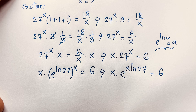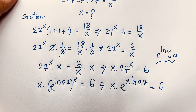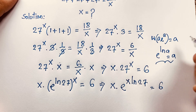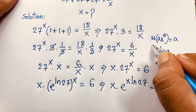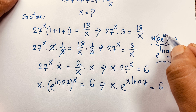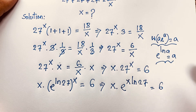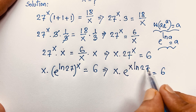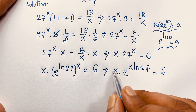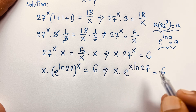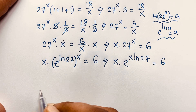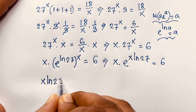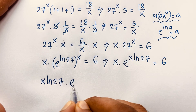We know the Lambert W function applies when we have the form a·e^a = a. Here our expression is x·e^(x·ln27), but there is no ln27 on the left coefficient yet. So I multiply both sides by ln27 to match the required form: x·ln27 · e^(x·ln27) = 6·ln27.